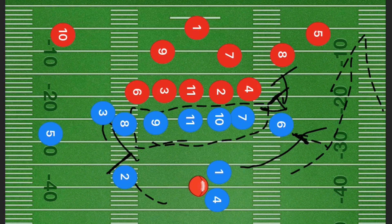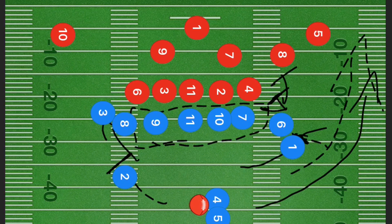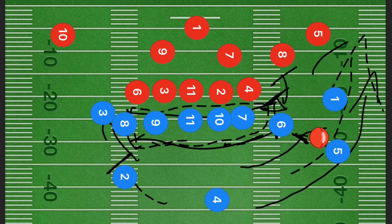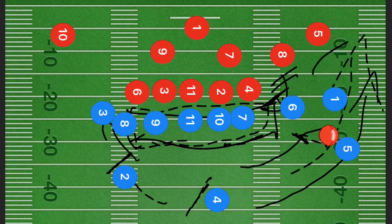Every single one of these guys takes one step to their right and then sets a block, because the final play is running up the right side. Player 5 runs back down and gets the handoff, running up the right side — that's why the whole front line is shifting right and blocking. Player 1 is going to be the lead blocker. You can substitute a running back in for him. Player 6 blocks downfield and player 4 blocks on the backside so nobody follows player 5, who should have a clear sideline up the field.